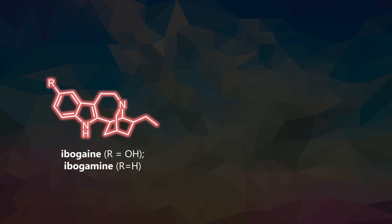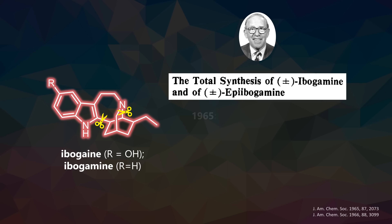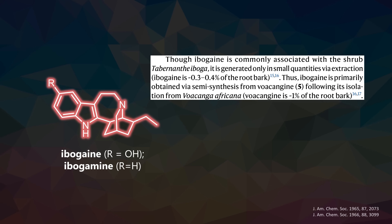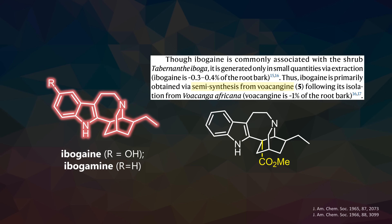Ibogaine and its simpler cousin Ibogamine — lacking the aromatic methoxy group — were first synthesized by Büchi in the 1960s. Since then, there have been more syntheses than you can count, but most took more than a dozen steps and typically yield less than 5–10% final product. Currently, Ibogaine is primarily obtained semi-synthetically from a carboxylated cousin in the Iboga family in low yield. Very efficient approaches might be the way to access large quantities of Ibogaine and related analogs for clinical purposes.